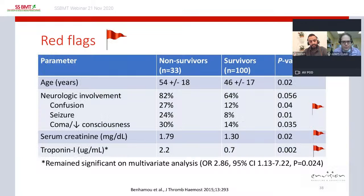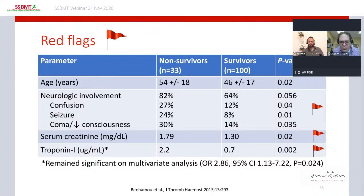Unlike our first patient, this patient presents with several red flag symptoms. Data from the French cohort comparing 100 survivors and 33 non-survivors of acute TTP showed that non-survivors tended to be older, have higher frequency of neurologic involvement, higher serum creatinine, and higher troponin I. Our patient is young but has neurologic involvement, elevated creatinine, and elevated troponin I — red flags suggesting she could be at risk for early death.